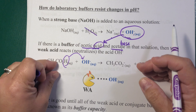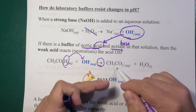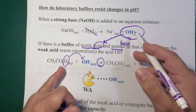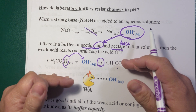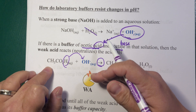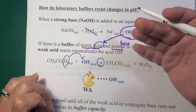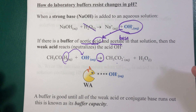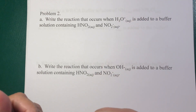Now if you keep adding hydroxide over and over, this reaction keeps producing the conjugate base. Eventually you'll reach a point where you've added so much hydroxide that you run out of acid to neutralize it — that's the buffer capacity. Once you've used up the acid or the base, the pH will jump either up or down depending on what you're adding. A buffer is effective only until you've run out of weak acid or weak base.